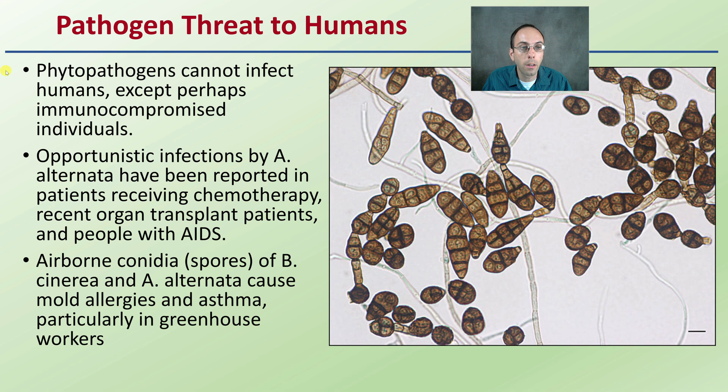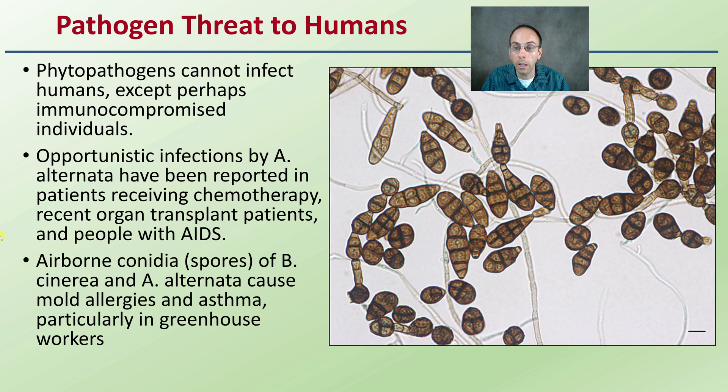Regarding pathogenic threat to humans: phytopathogens cannot infect humans except perhaps immunocompromised individuals. However, there are opportunistic infections by Alternaria — as we can see here in a microscopic view — reported in patients receiving chemotherapy, recent organ transplants, and people with AIDS. Also, airborne conidia, which are basically spores of Botrytis and Alternaria, cause mold allergies and asthma, particularly in greenhouse workers. So don't think you're completely immune just because a pathogen may not be a direct human infection agent.